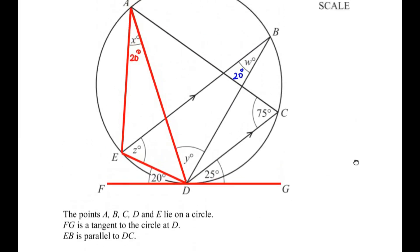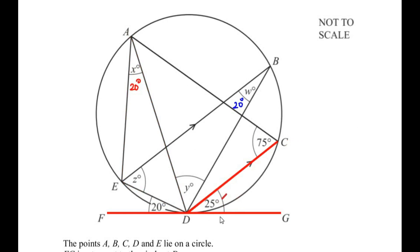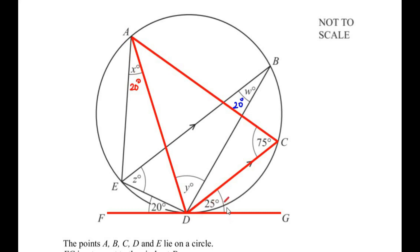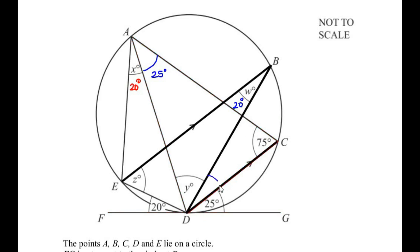Now let us look at chord CD. Chord CD makes an angle of 25 degrees with the tangent, and through this chord there is an angle made at point A. This means angle CAD is also going to be 25 degrees. Now let us make use of the parallel lines: it was given that EB is parallel to DC. Since EB is parallel to DC, angle B becomes equal to angle D because of the alternate angles property of parallel lines. So angle BDC equals 20 degrees.